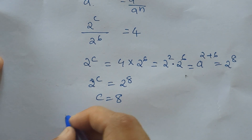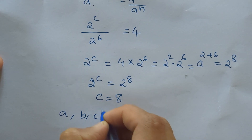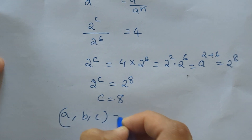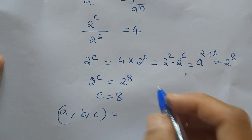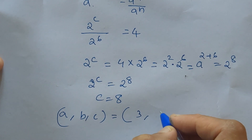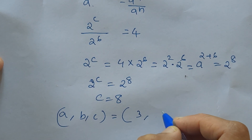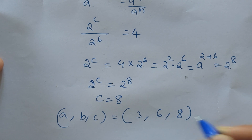So what we have got: the values of A, B, and C are A equals 3, B equals 6, C equals 8.